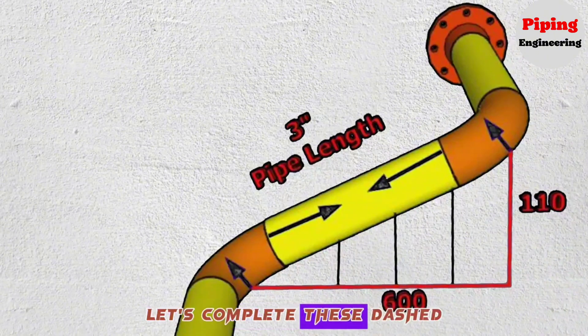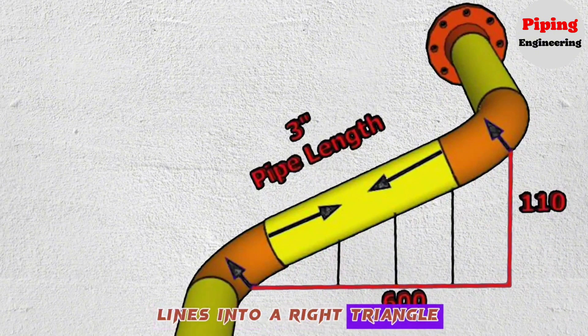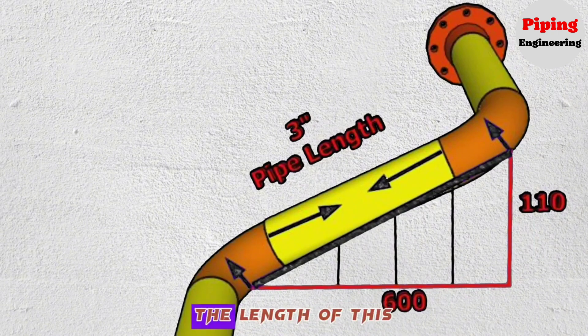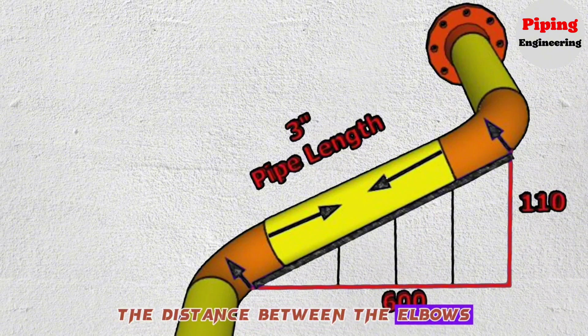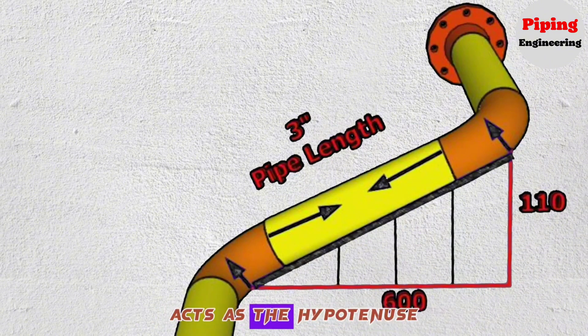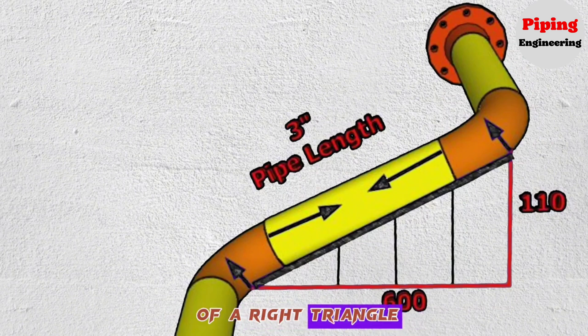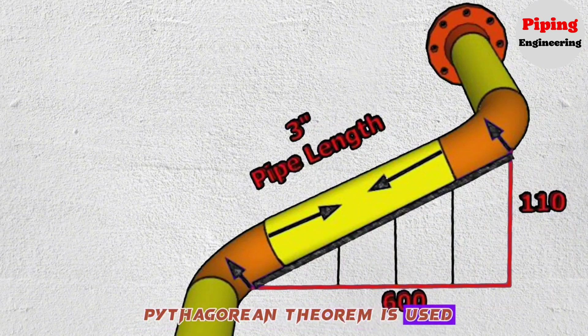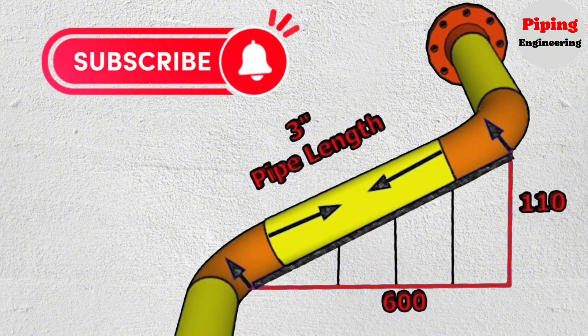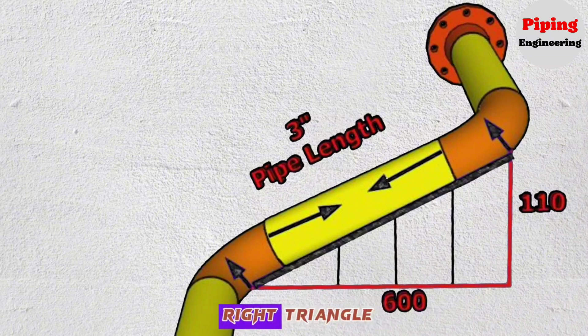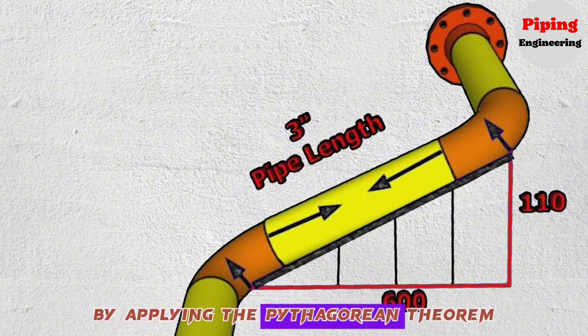Let's complete these dashed lines into a right triangle to find the distance between the elbows. The length of this blue line will be equal to the distance between the elbows. Here, this blue line acts as the hypotenuse of a right triangle. We know that the Pythagorean theorem is used to find the hypotenuse in a right triangle. Let's calculate the length of the blue line in this right triangle by applying the Pythagorean theorem.